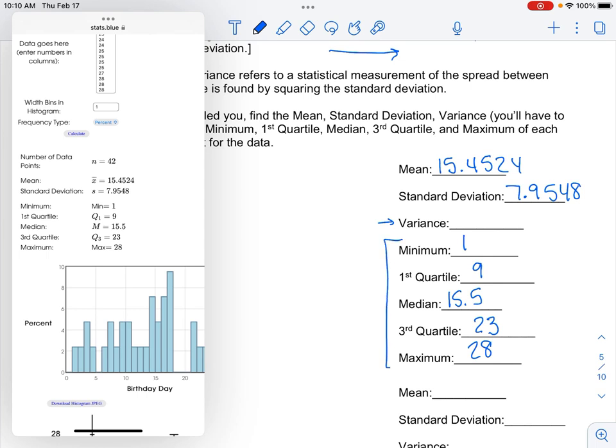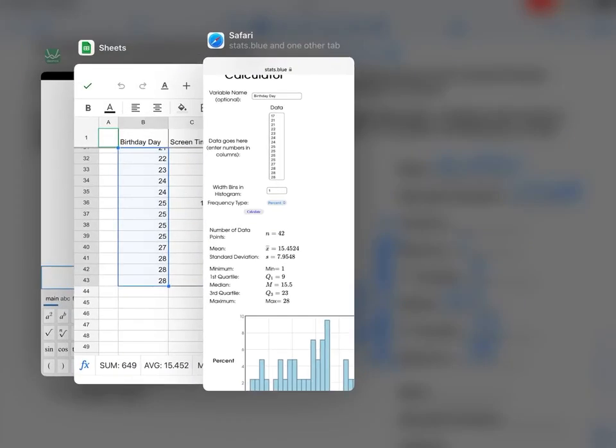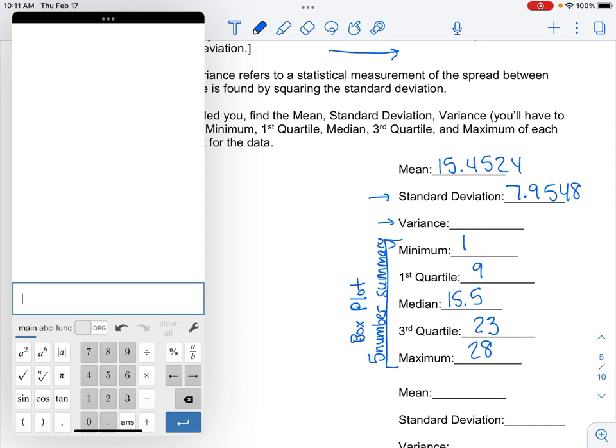Now, these five numbers are something called a five number summary. And these are what we use to create our box plot. And then we're going to have to find our variance. So you can pull up a calculator. And all you do is you take your standard deviation, keep all those decimals, and then you just square it. And your variance is this number. So it's about 63.2788.